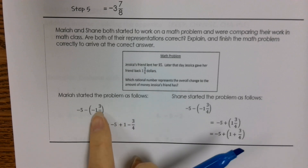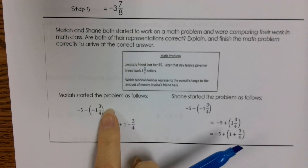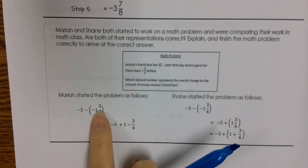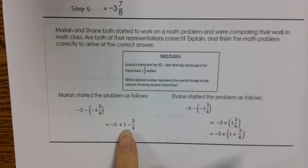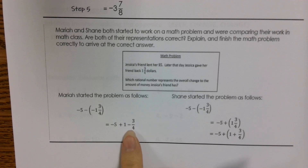Shane is correct. If we change 'minus negative one and three-fourths' to a positive, it should be positive throughout the whole thing. One minus three-fourths is just going to give you one-fourth instead of one and three-fourths. So you want to make sure that when you're working through that, you're changing the entire mixed number — whole number and fraction together.